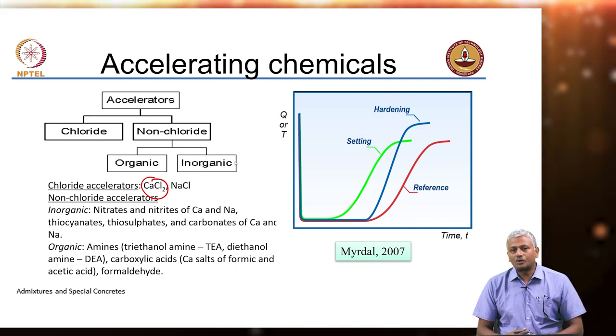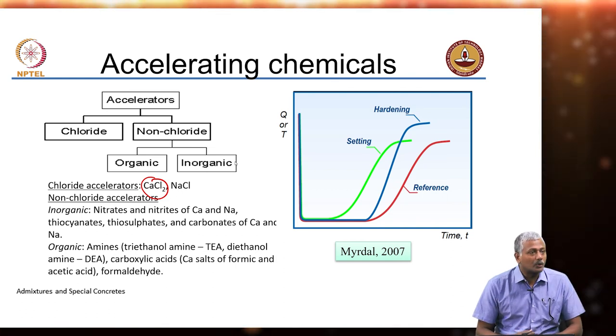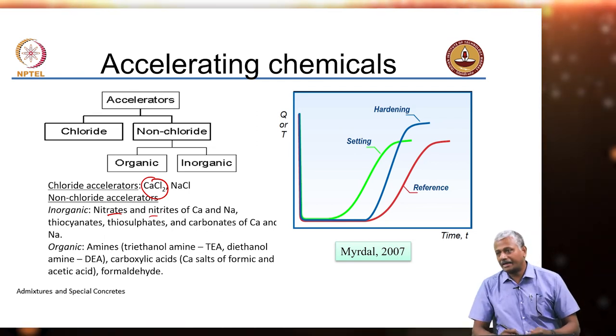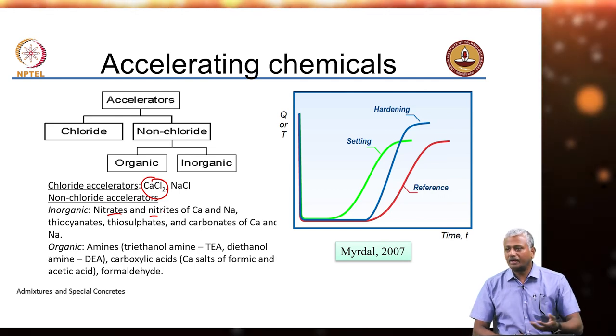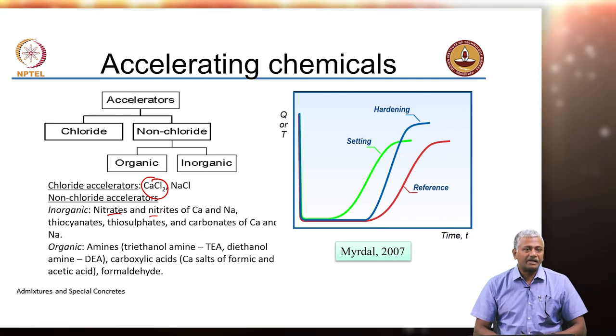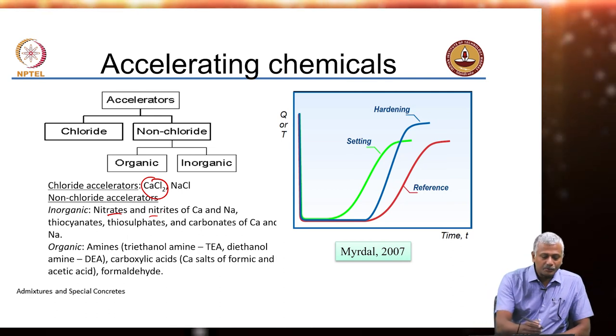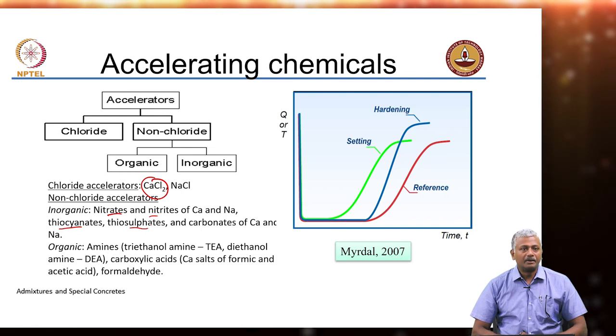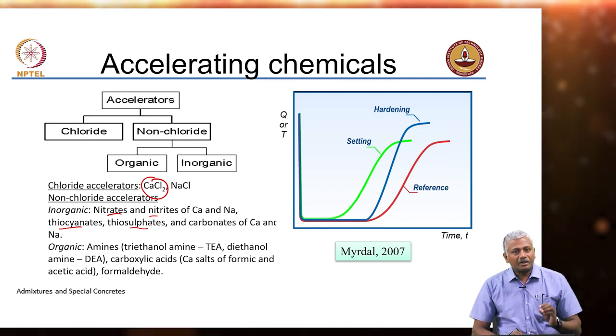But because in reinforced concrete we have the problem of corrosion, people have increasingly relied on non-chloride accelerators. These are typically nitrates and nitrites as we saw earlier. These anionic species including nitrates and nitrites are typical when we want to interact with the cementitious system from calcium or sodium cationic sources. The other possibilities are thiocyanates, thiosulphates and carbonates of calcium and sodium.